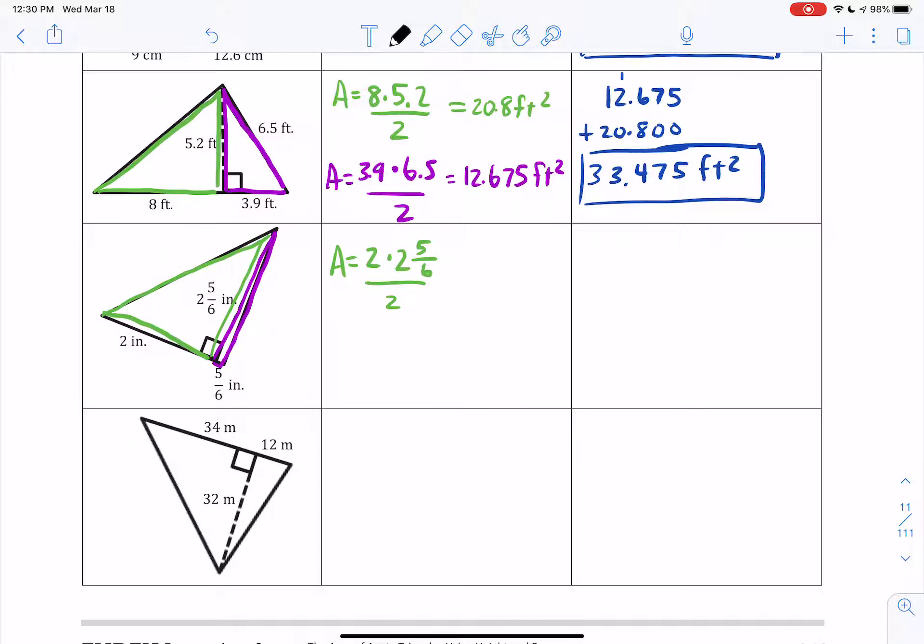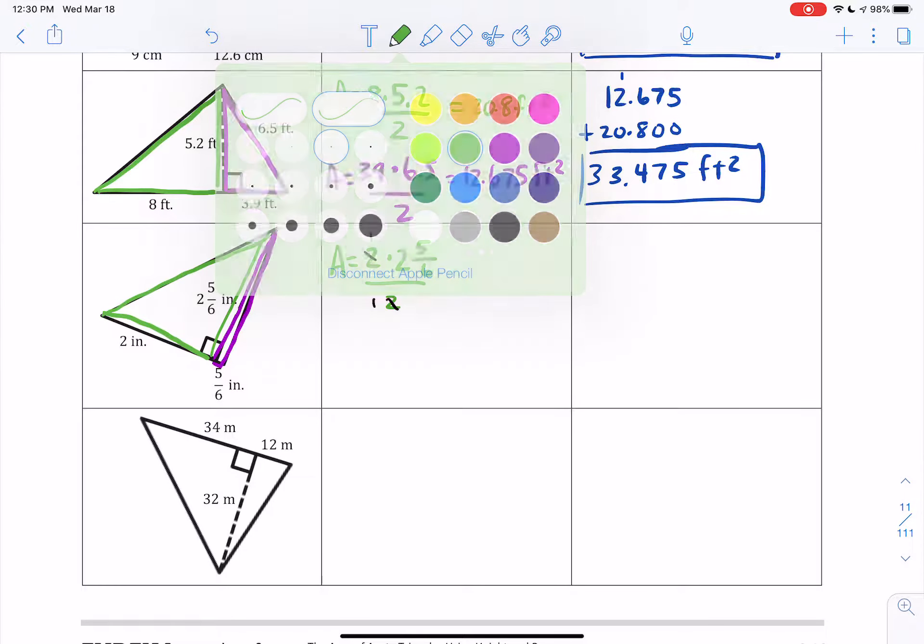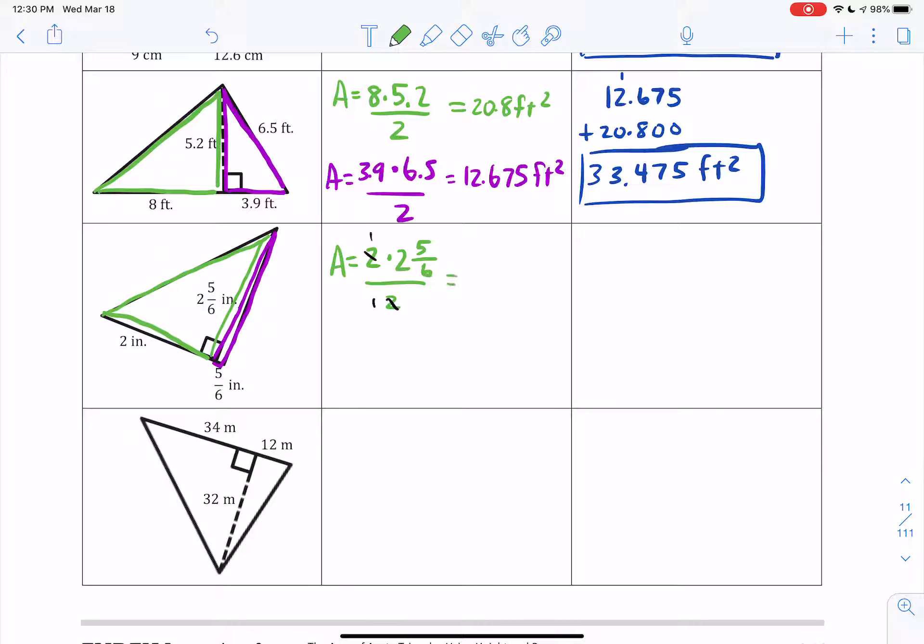Now here's a little bit of a trick, guys. I have a 2 on top and a 2 on bottom. Well, 2 divided by 2 is just 1. So that makes this, the rest of the problem, actually really easy. 1 times 2 and 5 sixths divided by 1 is just 2 and 5 sixths. So the answer 2 and 5 sixths inches squared.